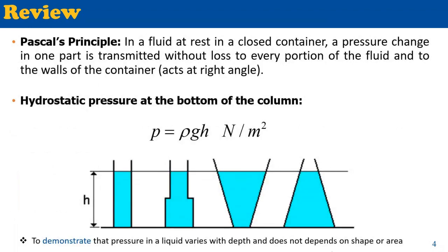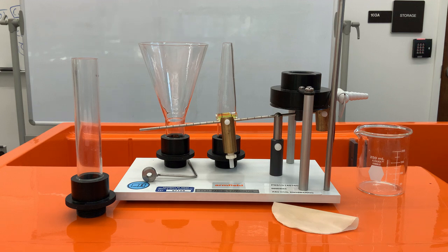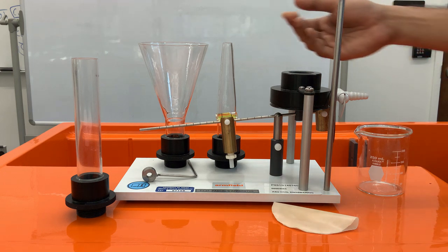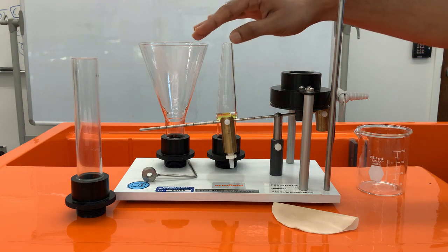Another review of Pascal's principle, which says that in a fluid at rest in a closed container, a pressure change in one part is transmitted without any loss to every portion of the fluid and acts at right angles to the walls of the container. This principle can be mathematically presented as p = ρgh or ρg∆h, where ∆h is the change in height, ρ is the density of the liquid (in this case water), and g is the gravitational acceleration, 9.81 meters per second squared. We will demonstrate that the intensity of pressure depends on the depth of the water and is not affected by the shape of the container.